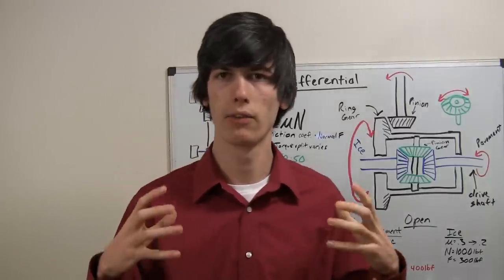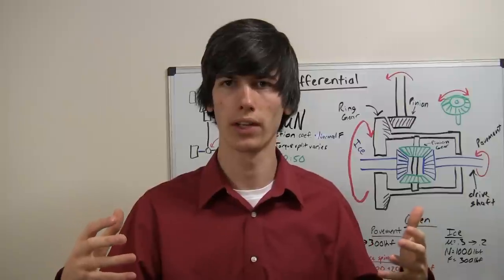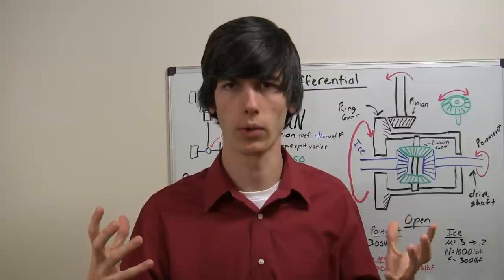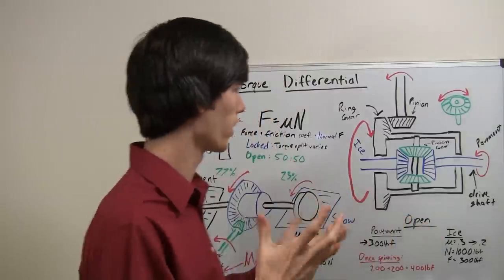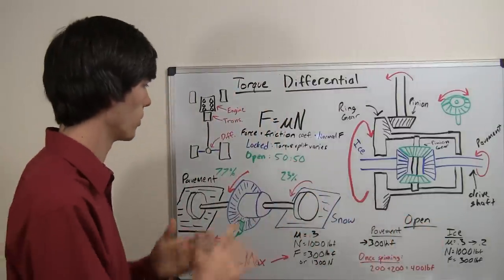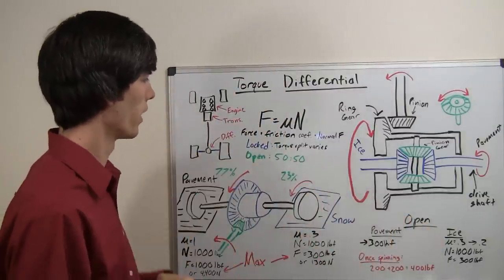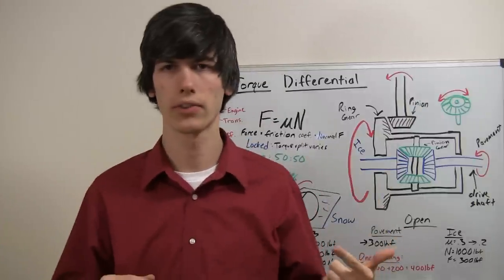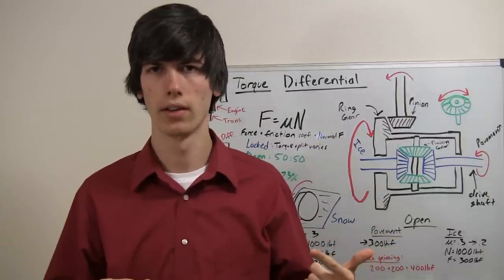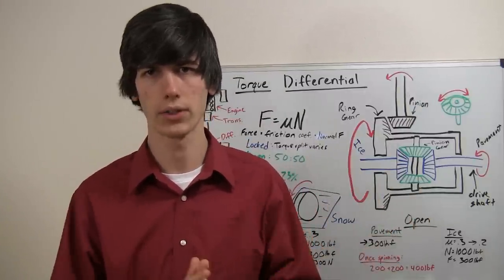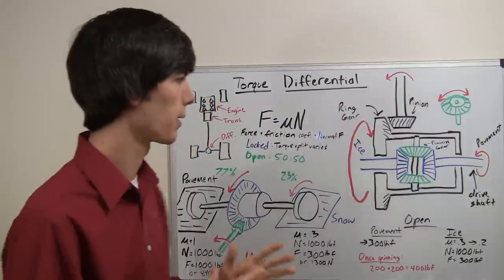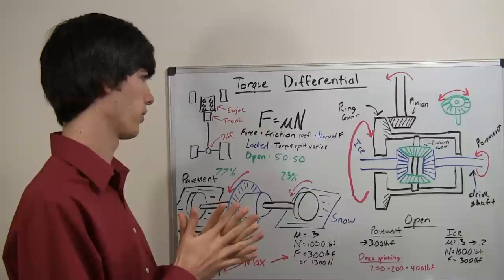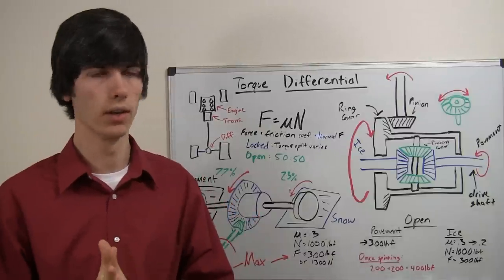Now the problem was people were saying: if you have a locked differential and both wheels are rotating at the same speed, then obviously they're getting the same amount of torque. Well, that's not exactly true — in fact, it's not true at all. And with an open differential, if one is spinning faster, does that mean it's getting all the torque? No, actually it's still getting half the torque. I'm going to try to explain that and use some math to make it more clear.